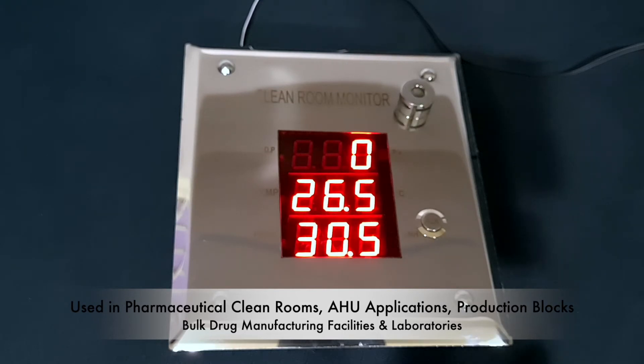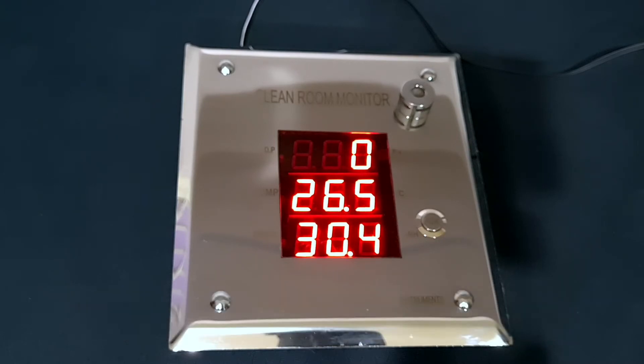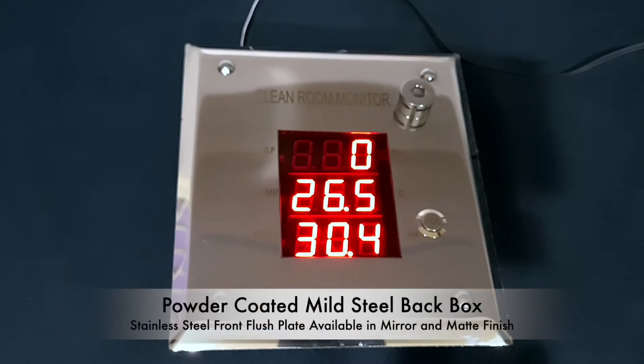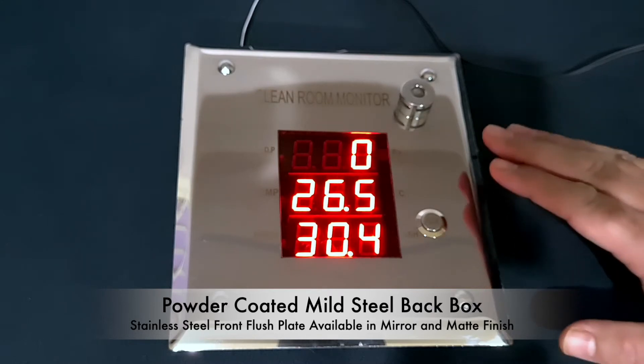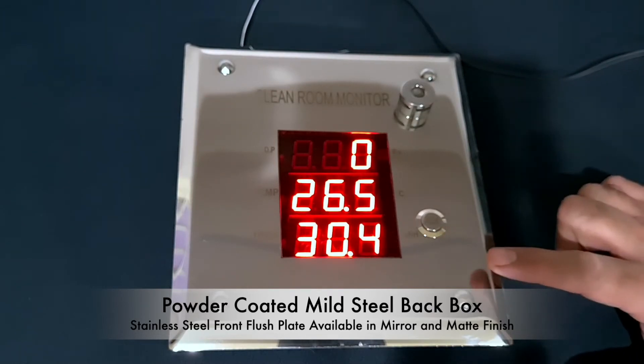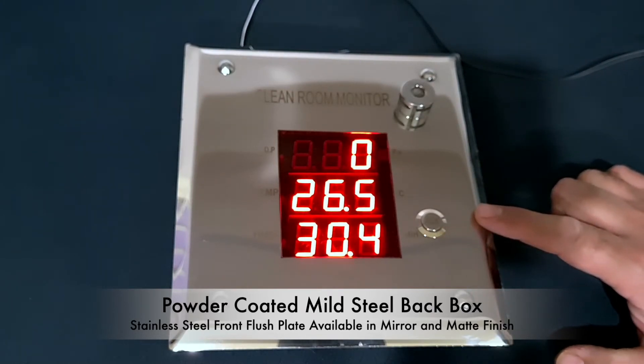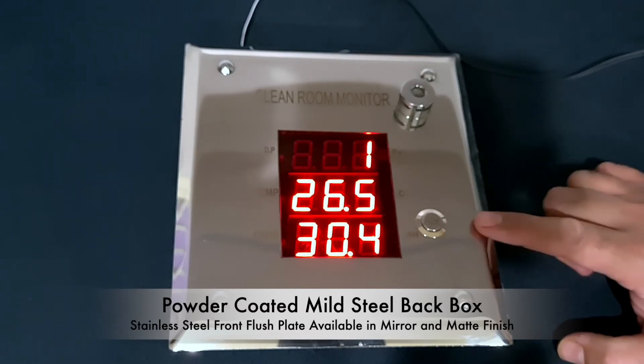The instrument comes with a powder coated stainless steel back box with a stainless steel front flush plate available in two finishes: the mirror finish like the product here and also a matte finish version.